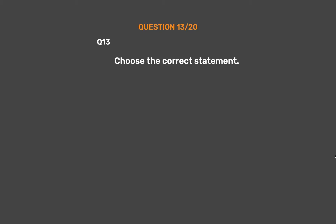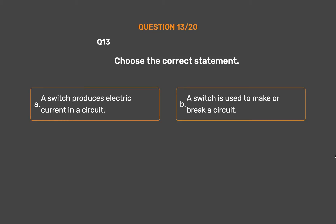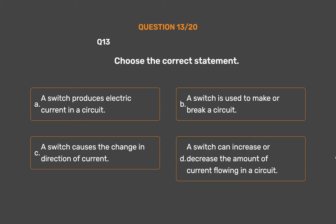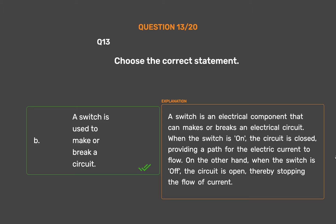Question number 13. Choose the correct statement. Option A: A switch produces electric current in a circuit. Option B: A switch is used to make or break a circuit. Option C: A switch causes the change in direction of current. Option D: A switch can increase or decrease the amount of current flowing in a circuit. The correct answer is Option B. A switch is used to make or break a circuit. When the switch is on, the circuit is closed, providing a path for the electric current to flow. When the switch is off, the circuit is open, thereby stopping the flow of current.